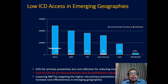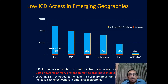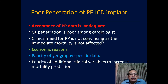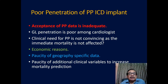If you look at the low ICD axis in emerging geographies, there is a low penetration of ICDs — be it China, Middle East, Latin America, India, or the Asian countries — with a penetration of around 1 to 4 percent. The cost of ICDs for primary prevention may be prohibitive in these developing economies. Why is penetration variable? The acceptance of primary prevention data is inadequate, guideline penetration is poor among cardiologists, and the clinical need for primary prevention is not convincing as the immediate mortality benefit is not evident. We also have economic reasons, and there is a need for geography-specific data.